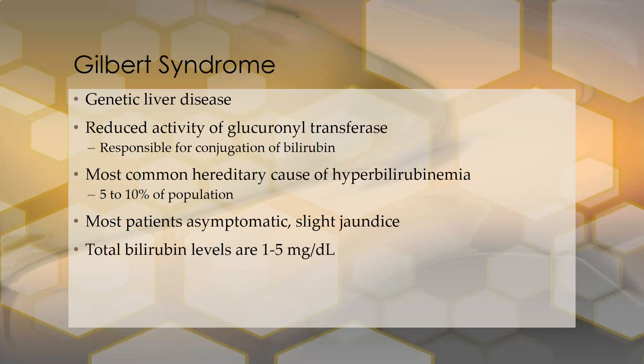Gilbert syndrome is a genetic liver disease involving reduced activity of glucuronosyltransferase, which is needed to detoxify bilirubin by conjugating it. It is the most common hereditary cause of hyperbilirubinemia, occurring in 5 to 10 percent of the population. Most patients are asymptomatic with very slight jaundice, and total bilirubin levels are 1 to 5 milligrams per deciliter.